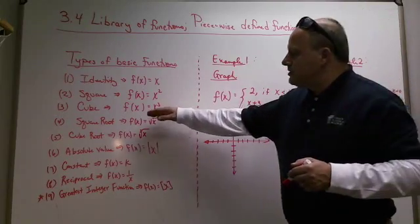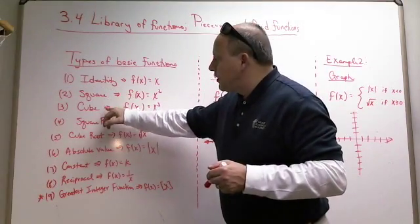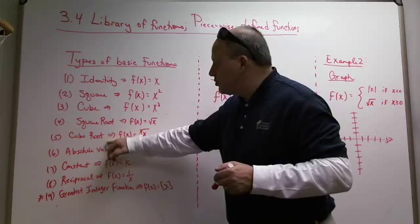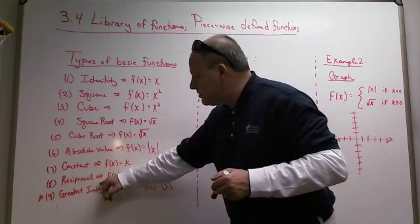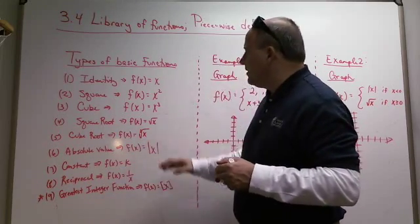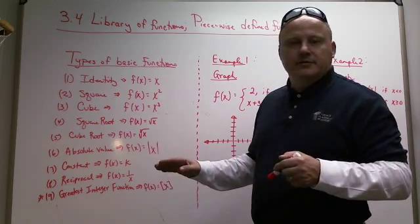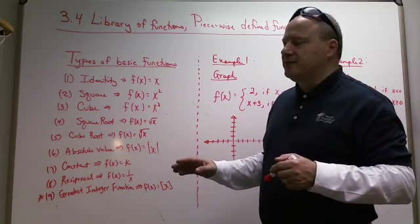But anyway, these are the ones. There's nine of them. The identity, the square, the cube, the square root, and the cube root, the absolute value, the constant reciprocal, and the greatest integer function. And this is what they kind of look like. That's the basic equation format.